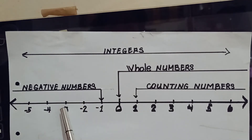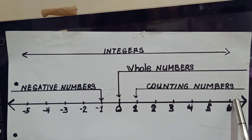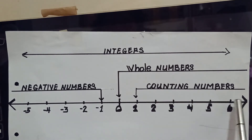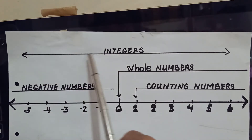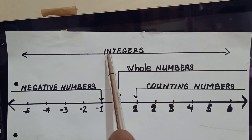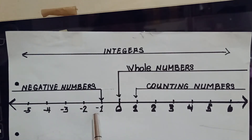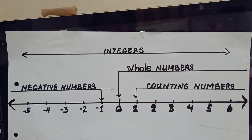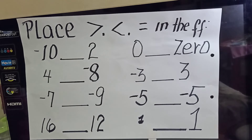With all these numbers — the negative numbers, 0, and the positive numbers — if we are going to consider them as one group, we call them integers. So if I am going to ask what integers are, integers are composed of all negative numbers, zero, and all positive numbers. Now that you understand where integers came from, we are ready to discuss the operations. Knowing what integers are, you are now ready to identify the relationships that exist between two numbers.